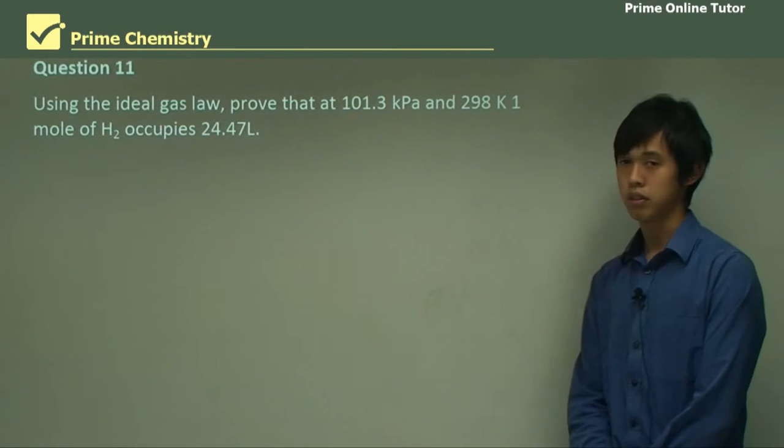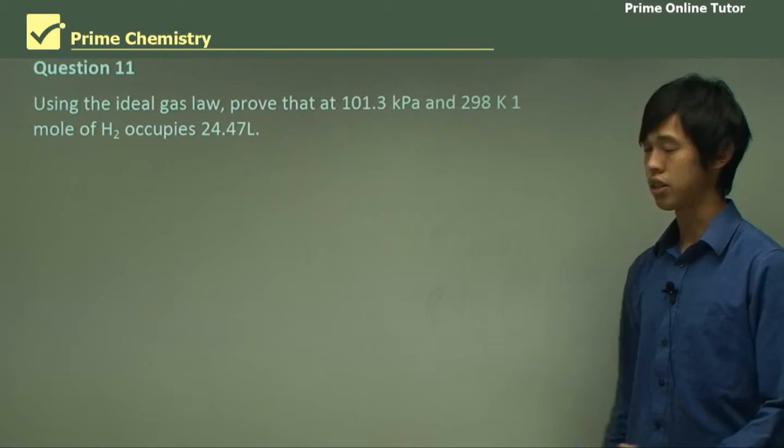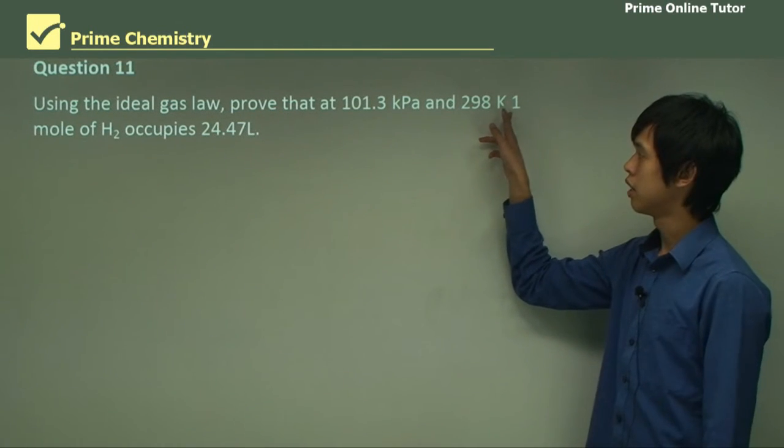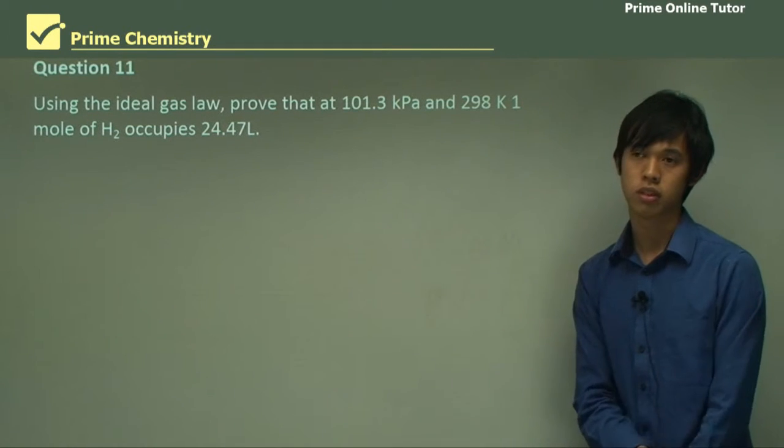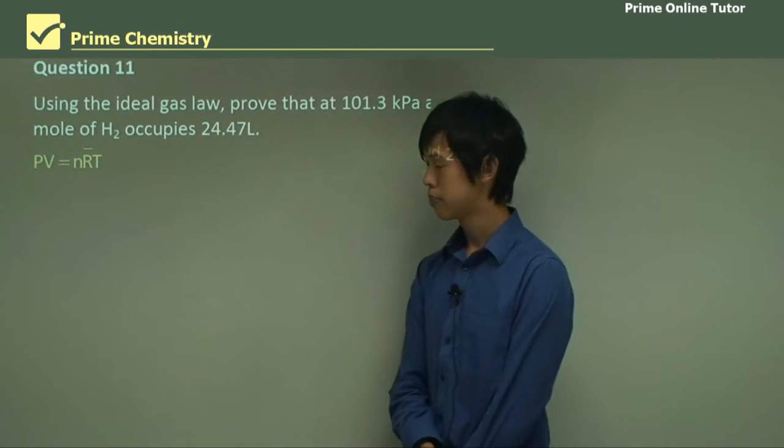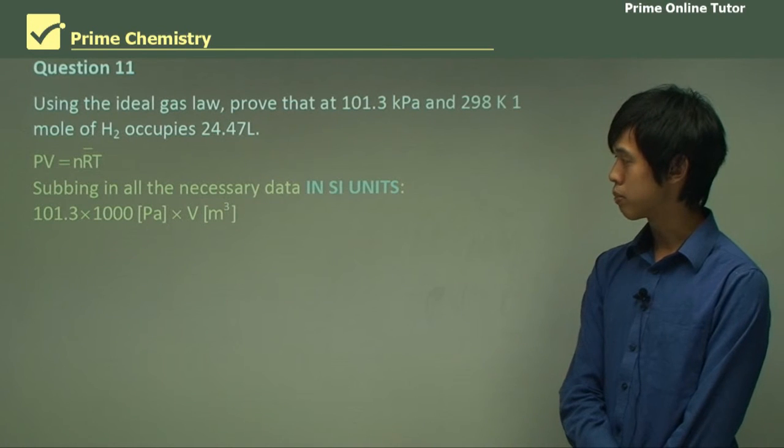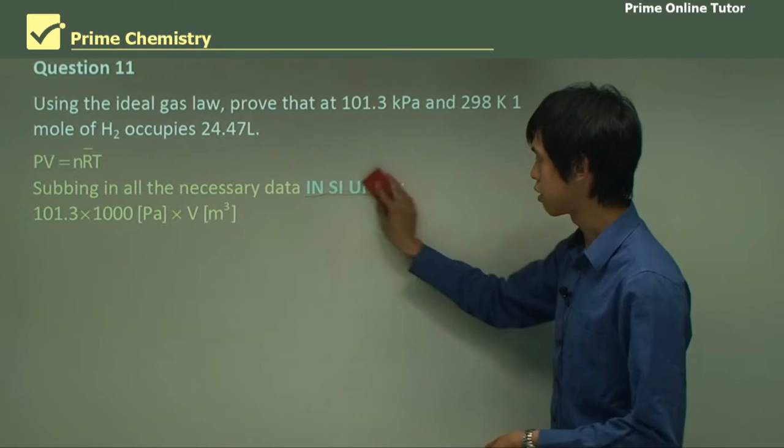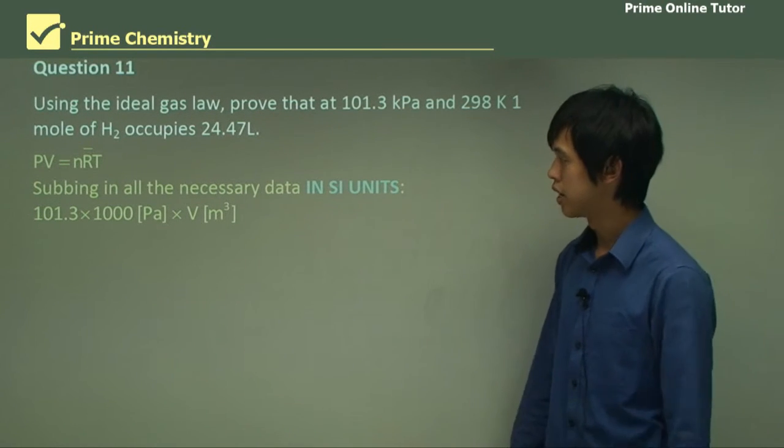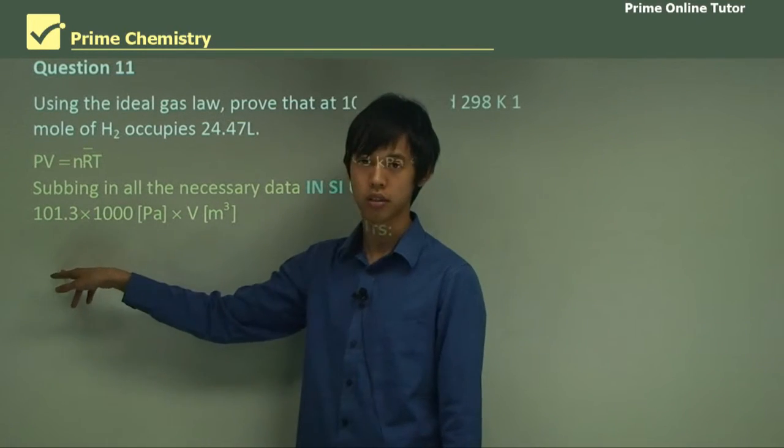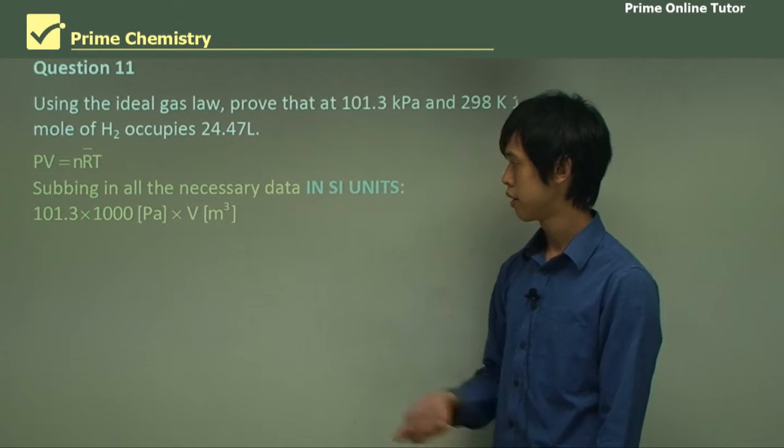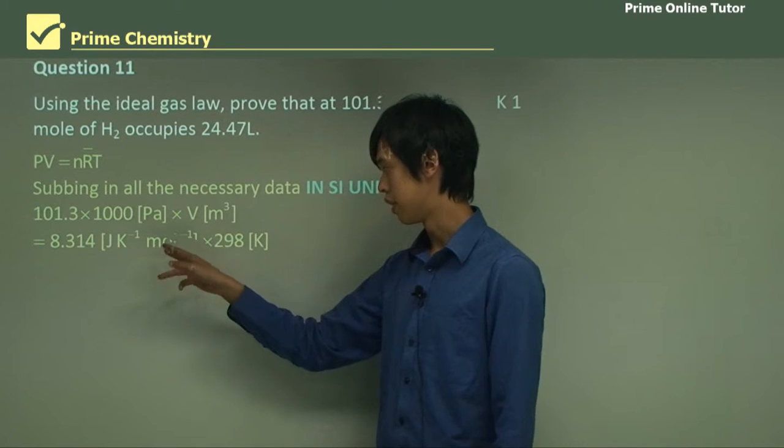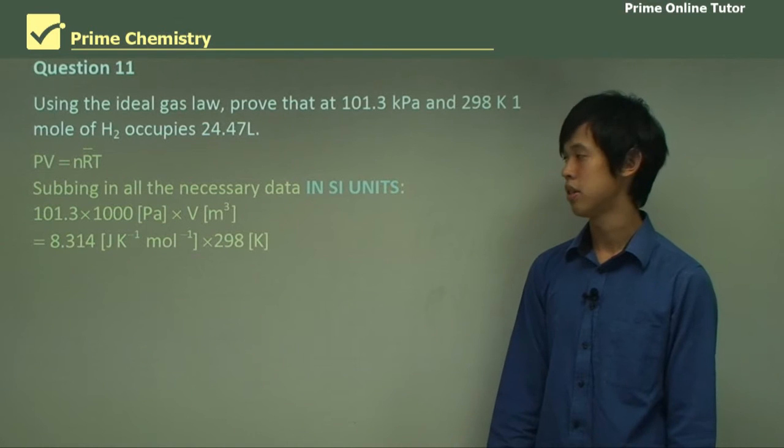So, using the ideal gas law, so remember that you won't actually have to do this in your exams, but I think it's good for you to understand this, just so you can see where all these numbers are coming from. So using the ideal gas law, prove that 101.3 kilopascals and 298 Kelvin, one mole of hydrogen gas, occupies 24.47 liters. This is a proof question. So we start with our ideal gas law, PV = nRT. And subbing in all the necessary data, and this is key, in SI units. We really need it to be in SI units or this won't work. So the SI unit for pressure is pascal. So 101.3 kilopascals is 101.3 times 1,000 pascals, times the volume in meters cubed, which is the SI unit for volume, equals 8.314 joules per Kelvin mole times 298 Kelvin.